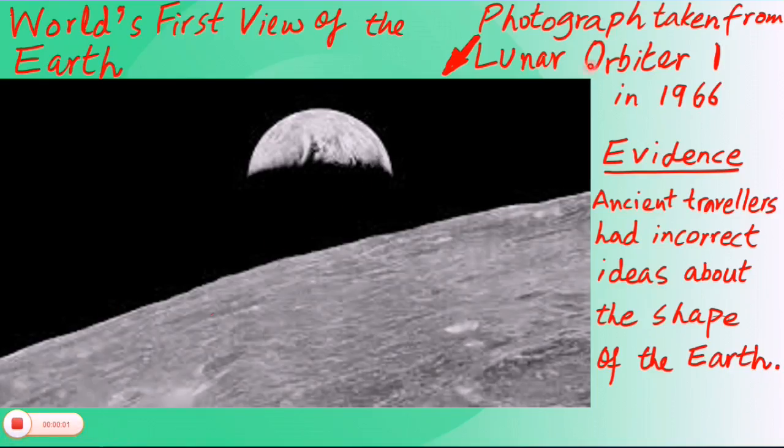Now this photograph, taken from Lunar Orbiter 1 in 1966, is the world's first view of the Earth. And this photograph clearly shows that the ancient travelers had incorrect ideas about the shape of the Earth, that it is flat and if they travel too far they would fall over the edge. In fact, our explanation of the behavior of astronomical bodies are based upon the evidence we have before us today. Our present day ideas and models may change in future and new evidence may be found.